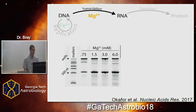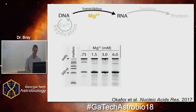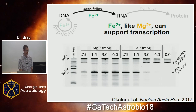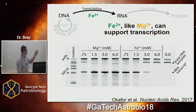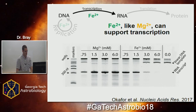Then we used an in vitro transcription kit to transcribe a 300-nucleotide template into RNA, visible on the gel, over a range of concentrations. With magnesium, transcription works best in the low millimolar range. When we swapped in iron, the optimum was almost an order of magnitude lower — iron supports transcription as well as magnesium at much lower concentrations. However, at higher concentrations iron is actually inhibitory, with no transcript produced by 6 millimolar.